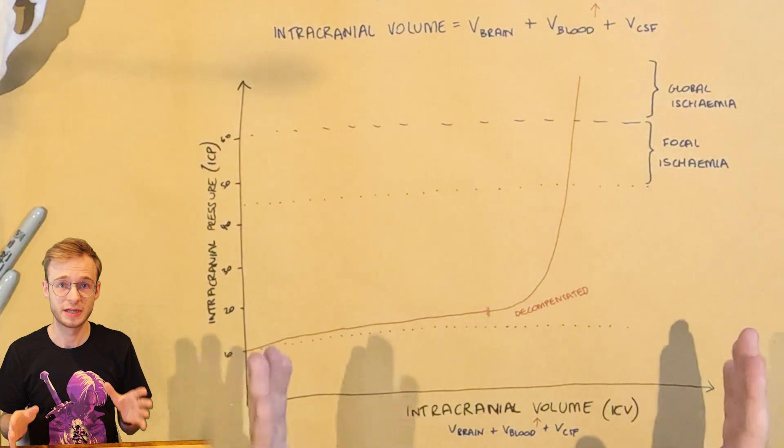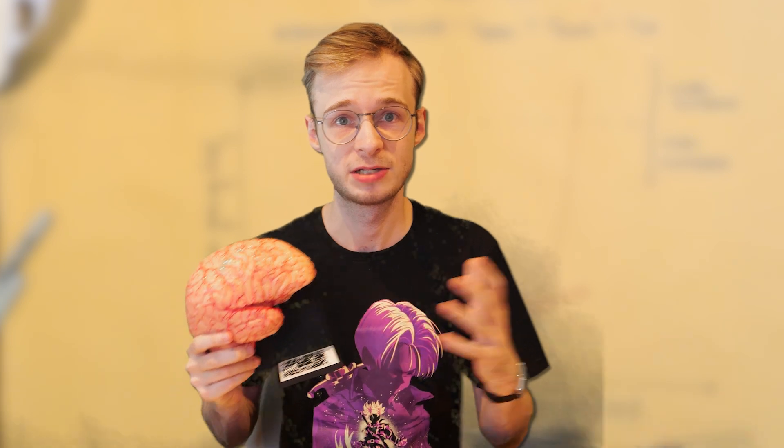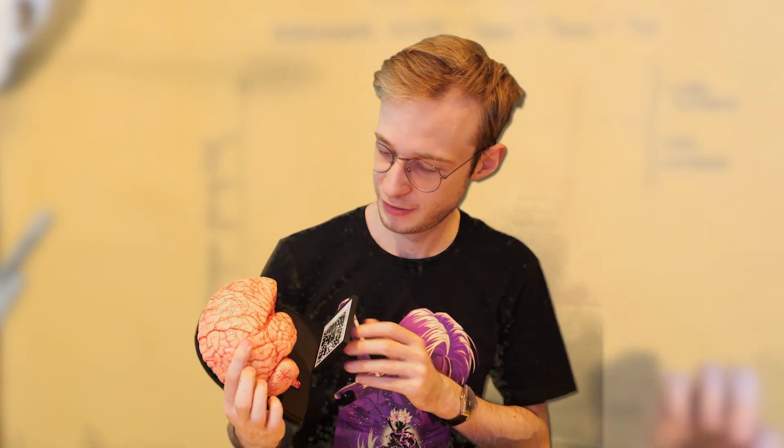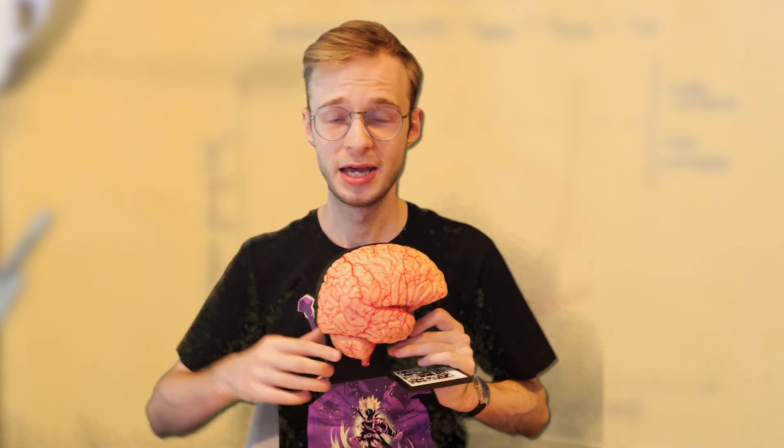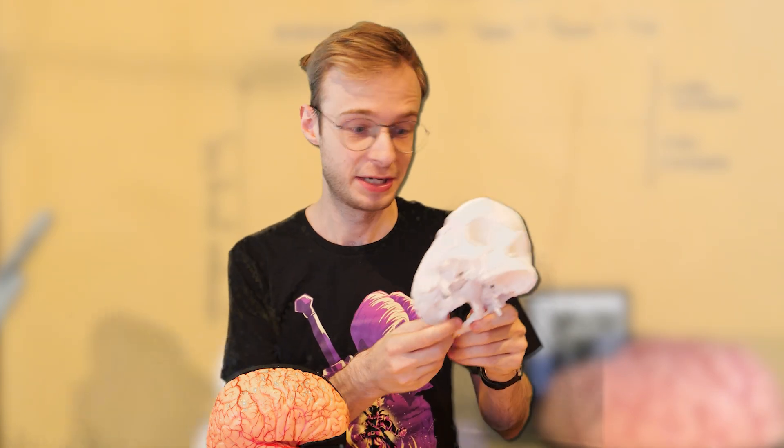But the other major risk with all of this is herniation. And that is when rising pressure inside the skull forces parts of the brain to shift or displace. There are several types, but the classic one that you'll have heard of is tonsillar herniation. And that's when the cerebellar tonsils get pushed down through the foramen magnum, the big hole at the bottom of the skull. That is the area of least pressure inside your closed system.